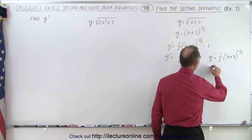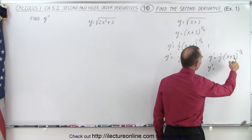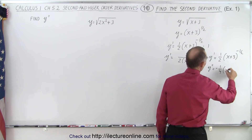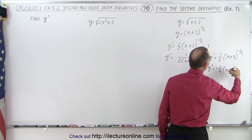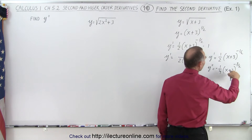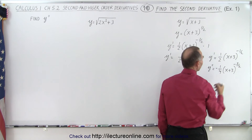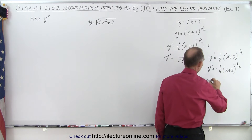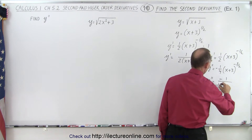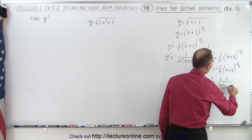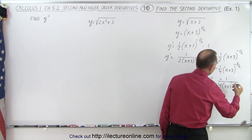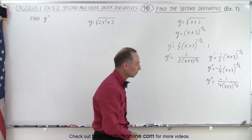Now we're going to find y double prime. That's equal to minus 1 half times 1 half, which is minus 1 fourth, times the quantity x plus 3 to the exponent minus 1 from 1 half, which is minus 3 over 2, times the derivative of what's inside, which is 1. Writing that out, we get y double prime is equal to negative 1 over 4 times the quantity x plus 3 to the 3 halves power.